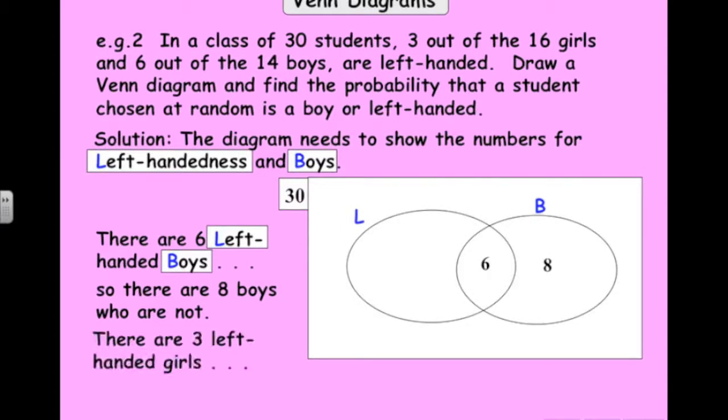3 out of the 16 girls are left-handed. So that means the people outside the boys' circle, but inside the left-handed circle, must be the left-handed girls. So that's 3. Adding those all together now, we've got 6 plus 8, 14 plus 3, 17. But the class contains 30 people. So that means there's 13 people on the outside who are not boys or left-handed. So they must be the right-handed girls.